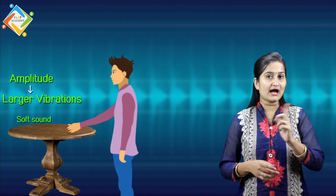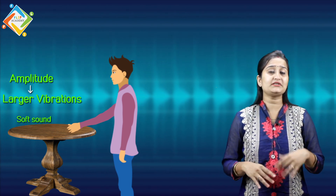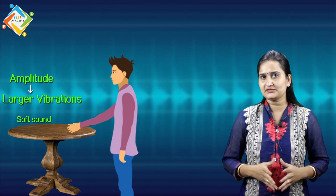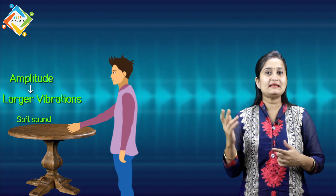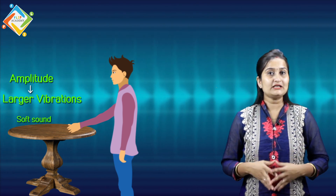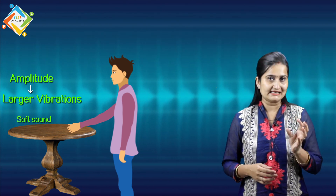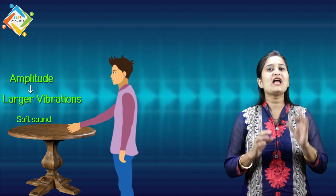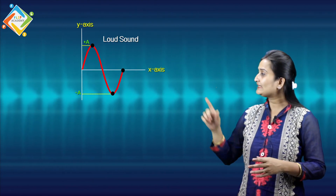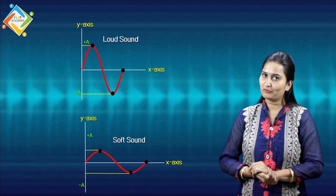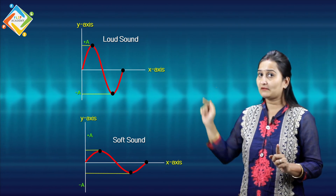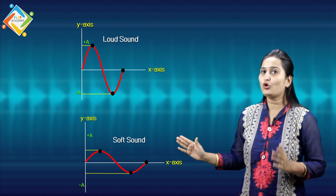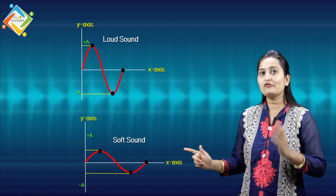The loudness of sound is due to larger vibrations — more vibrations create more disturbance in air particles, which reach our ears and cause more vibration in the eardrum, so we hear a loud sound. For soft sound, the vibration from the object is very mild, creating less disturbance in air particles and the eardrum. In the waveform diagram, a wave with a very high crest and deep trough represents maximum amplitude — that is a loud sound — while a wave with lower crest and trough represents low amplitude, which is a soft sound.